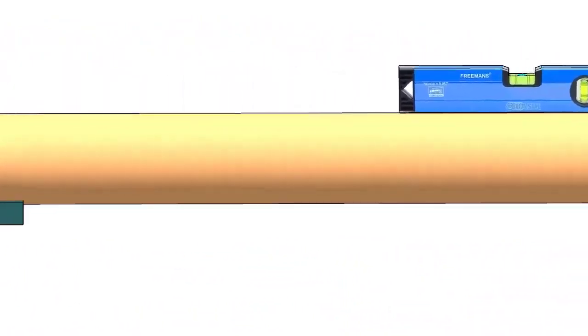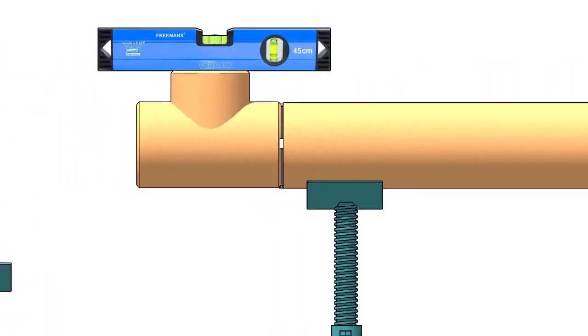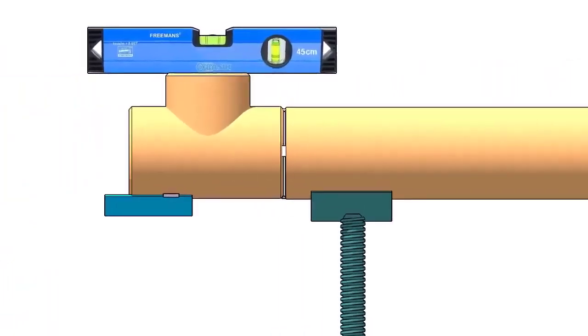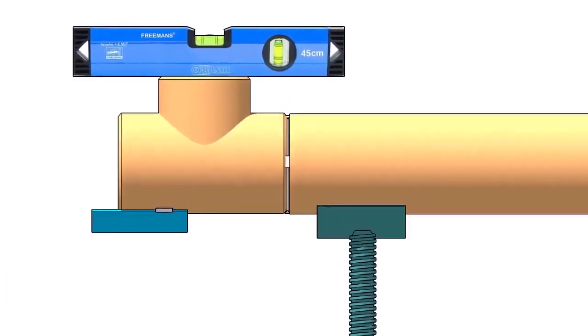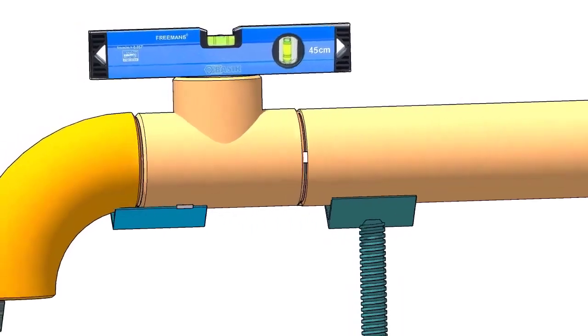Mark the center lines of the tee and the elbow. Tack weld the piece of angle below the tee if you don't have a ready-made pipe clamp. The size of the angle cleat may vary according to the size of the elbow. Here I am using a 50-50 angle because the pipe dia is 6-inch.